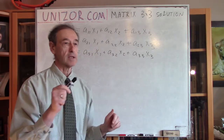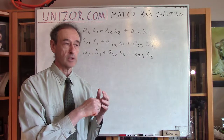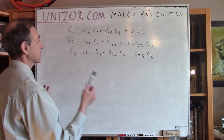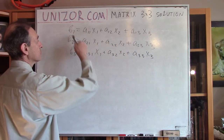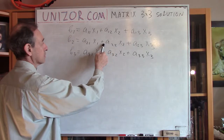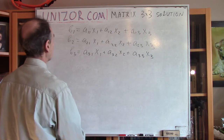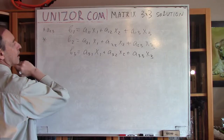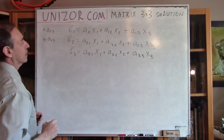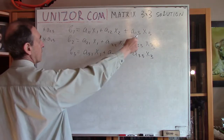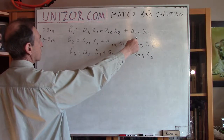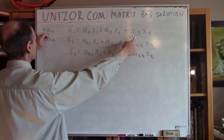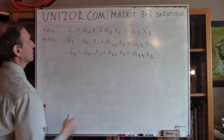I will do exactly the same as I did when explaining what the determinant of the matrix is. I will try to solve it by getting rid of x3 and reducing the system to two equations with two variables. I will multiply the first equation by A23, multiply the second by A13, and subtract — so x3 cancels out. After the subtraction, x3 will be eliminated.